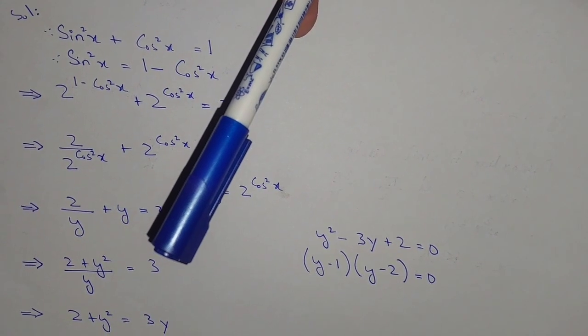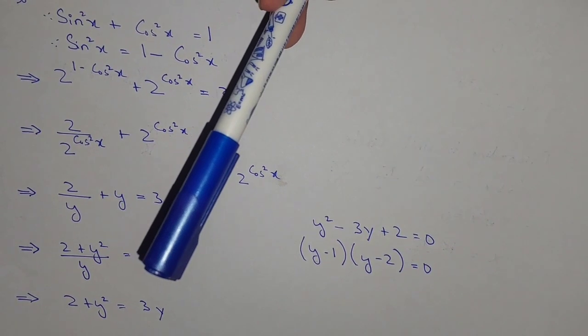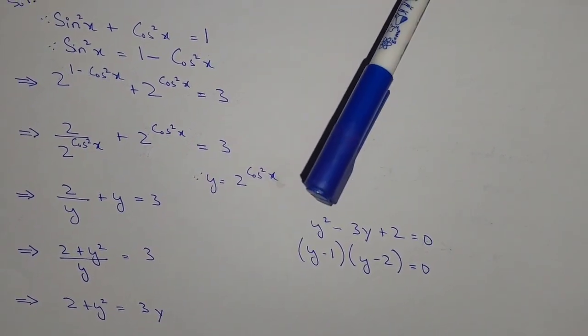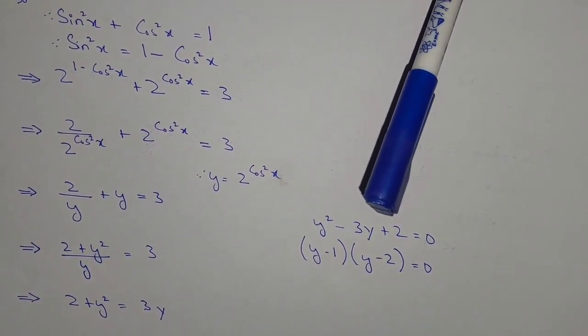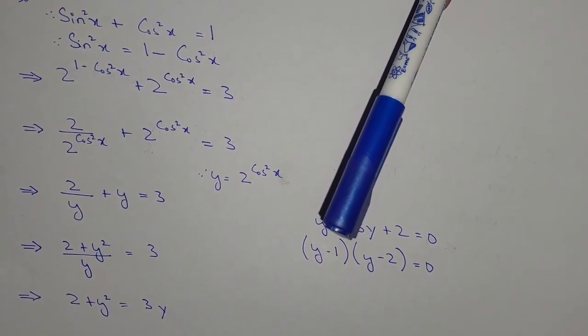Multiplying y with 3, we have 2 + y² = 3y. Rearranging: y² - 3y + 2 = 0.